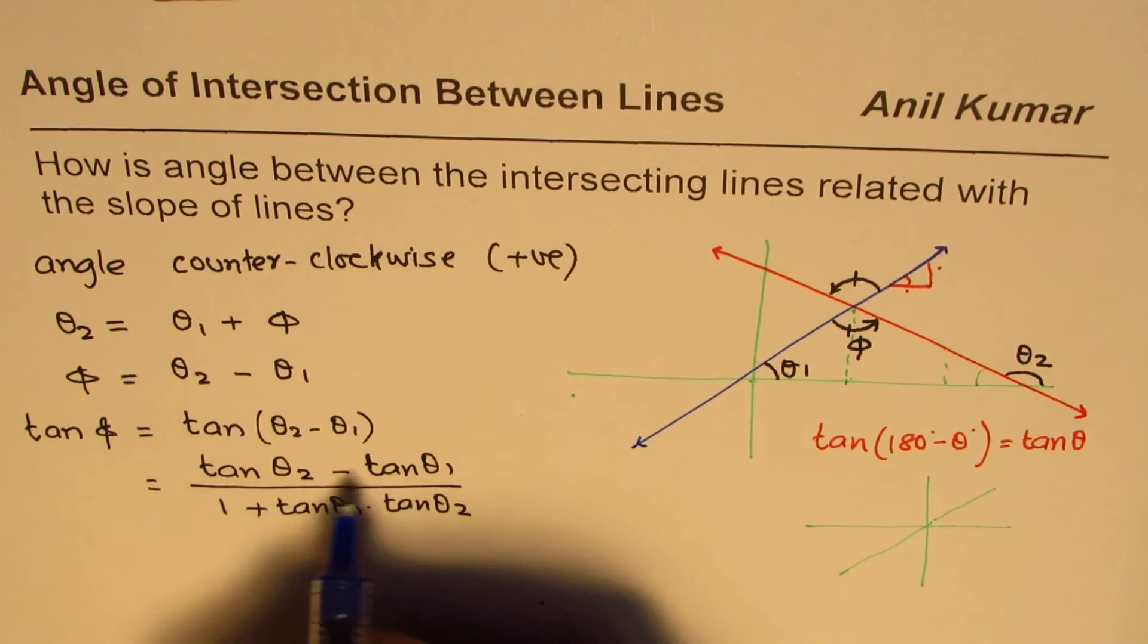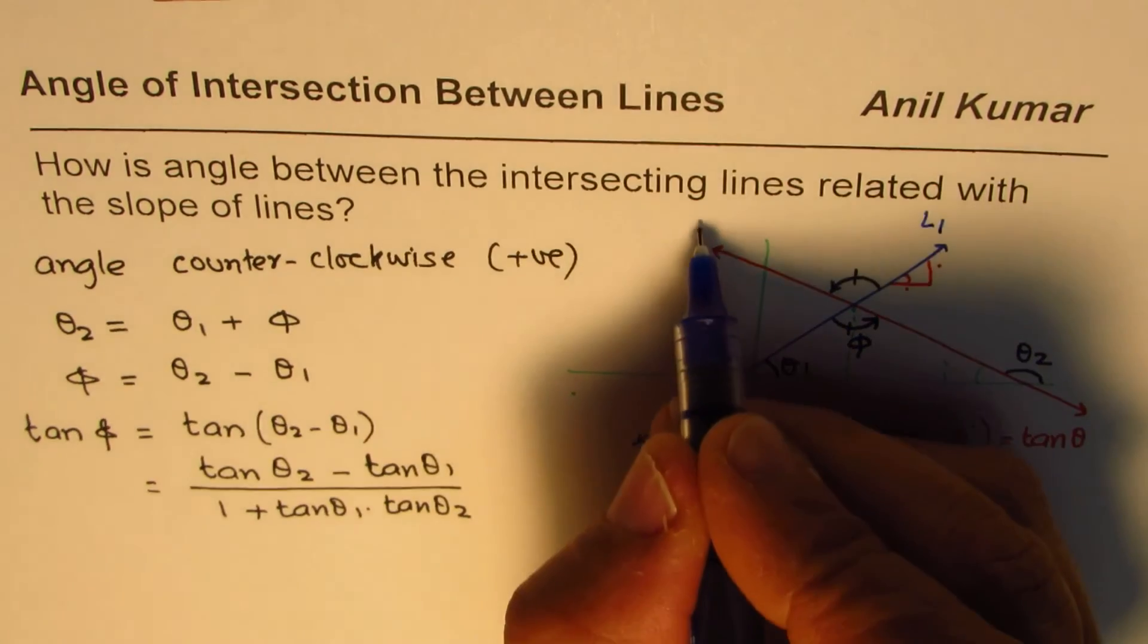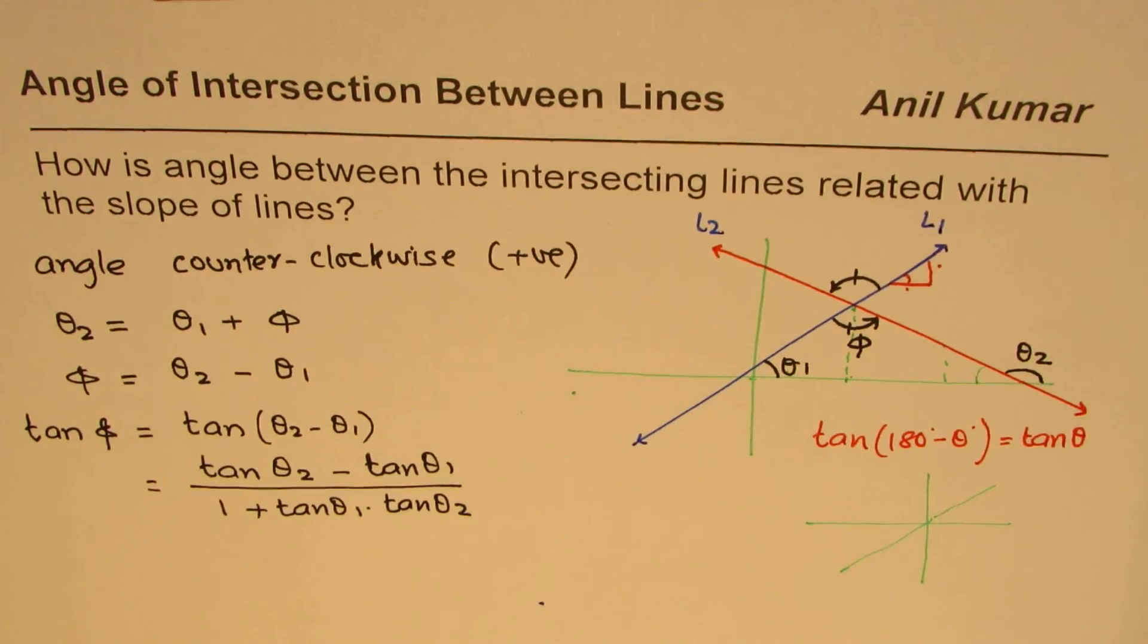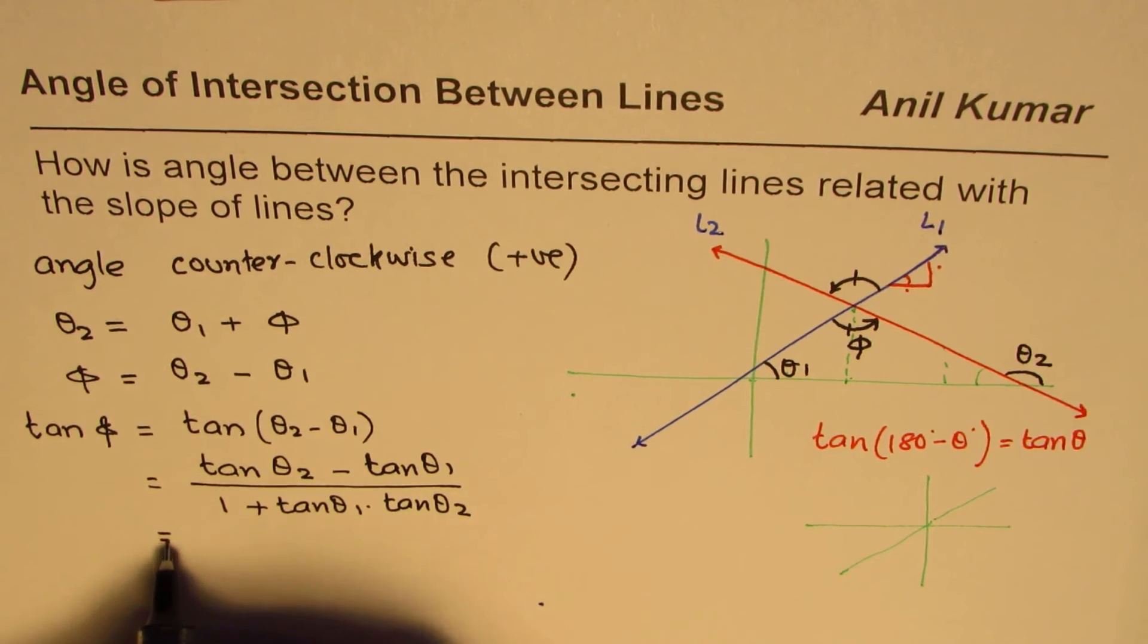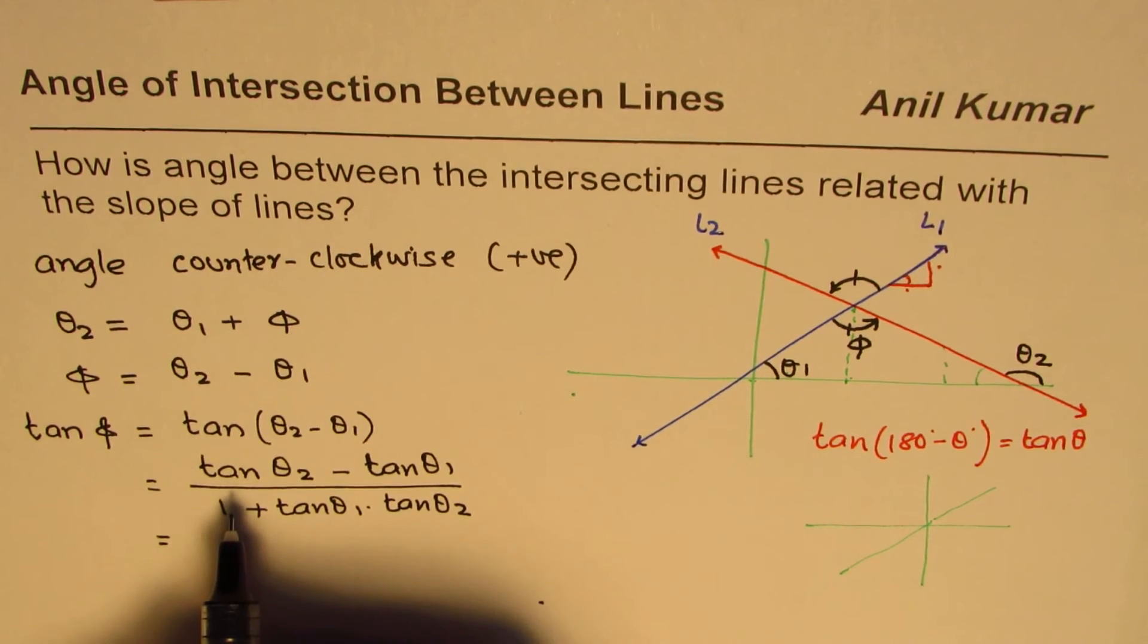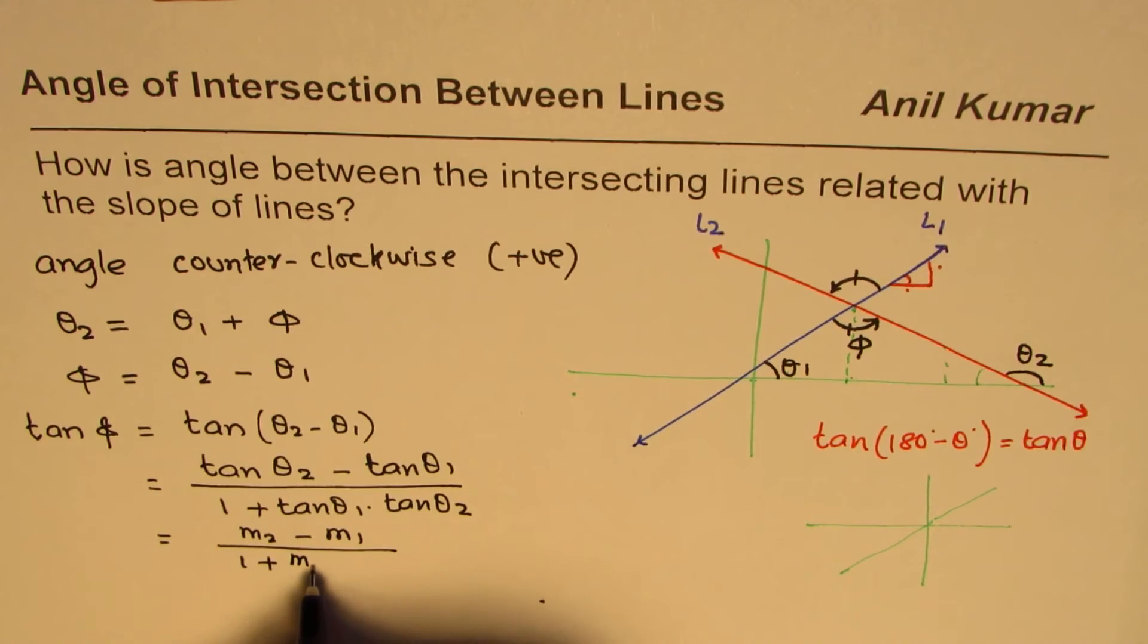So tan theta 2 and tan theta 1 are slopes of your lines, so if this line is line 1 and this is line 2, then the expression here is equal to slope of line 2 minus slope of line 1 divided by 1 plus product of these two slopes, which is m1 times m2.